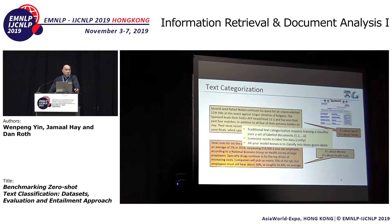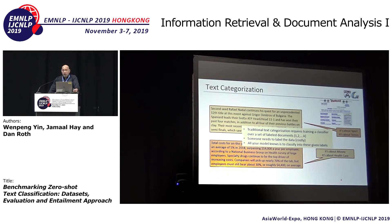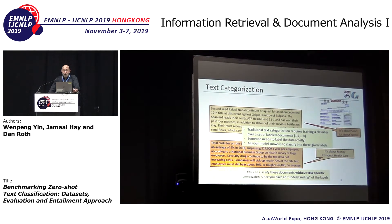Someone needs to label the data. And then all your model knows at the end is how to classify into these numbers, 1 through K. And now, of course, you can easily classify these documents without any task-specific information, since you have an understanding of the labels.